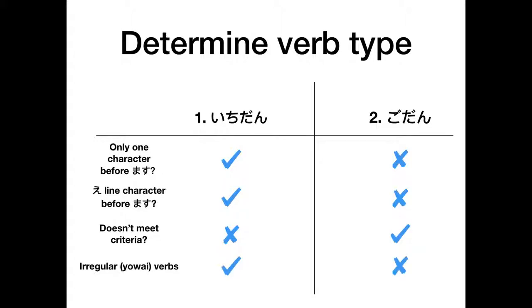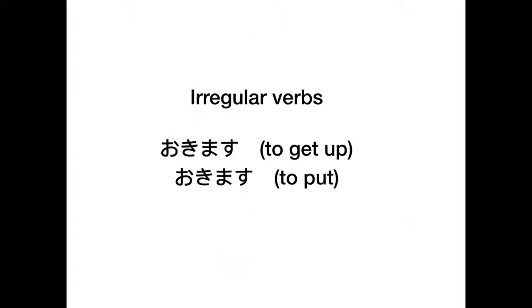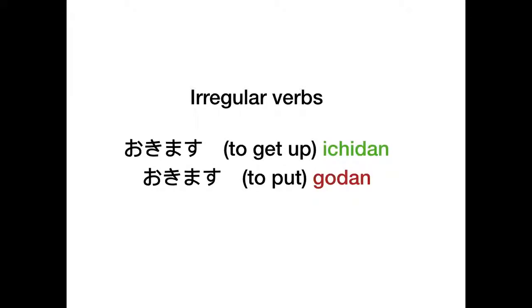There are a few exceptions, and I'll show you just one of them now. Okimasu can mean to get up or to put. To get up is ichidan. That's irregular. It should be godan based on the rules we just learnt. You just need to learn these irregular ones as you go, and there's not too many of them.